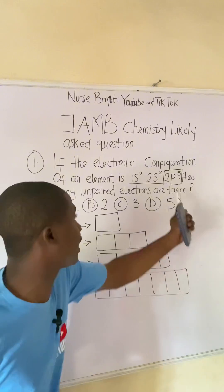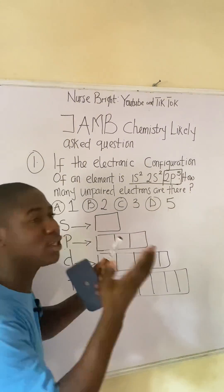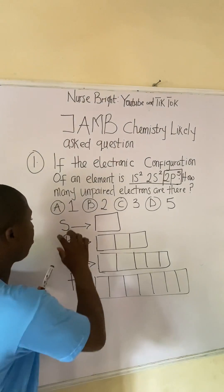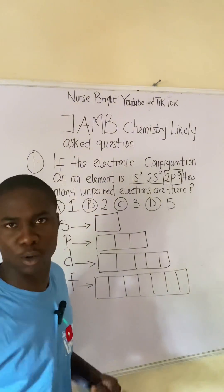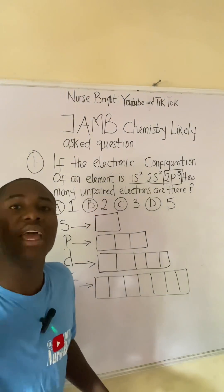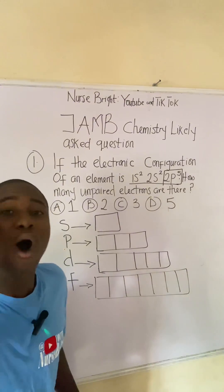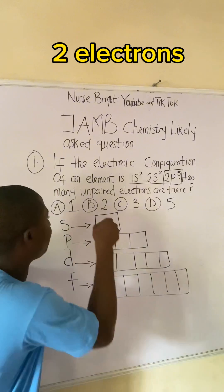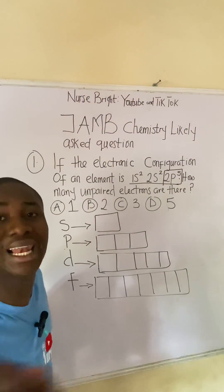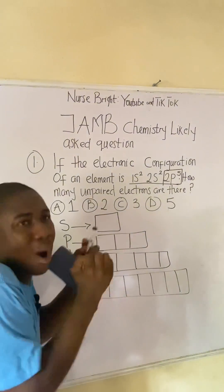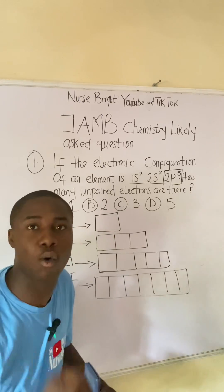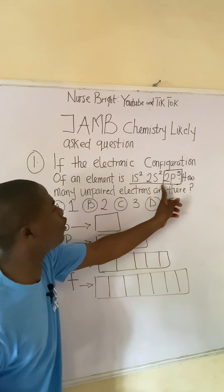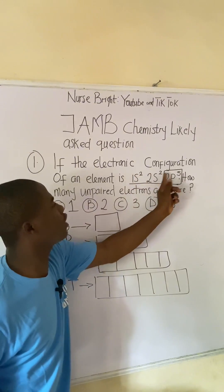So which part of the explanation should I look out for? I'll look out for the p orbital. It must be noted that each of the boxes holds a maximum of two electrons. These electrons sit inside the boxes, and the maximum number any one box can hold is two.